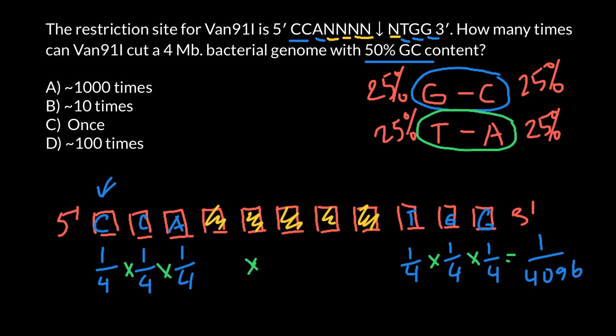The last thing we have to do is find how many times this restriction enzyme would cut four megabase double-stranded DNA. Four megabases means four million. We have to divide 4,000,000 by 4096. And as you see, all the answers here are just approximations, so we wouldn't get such a rounded number.